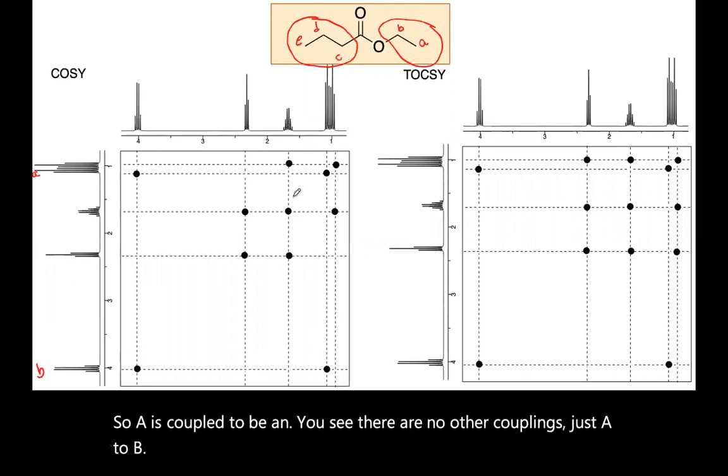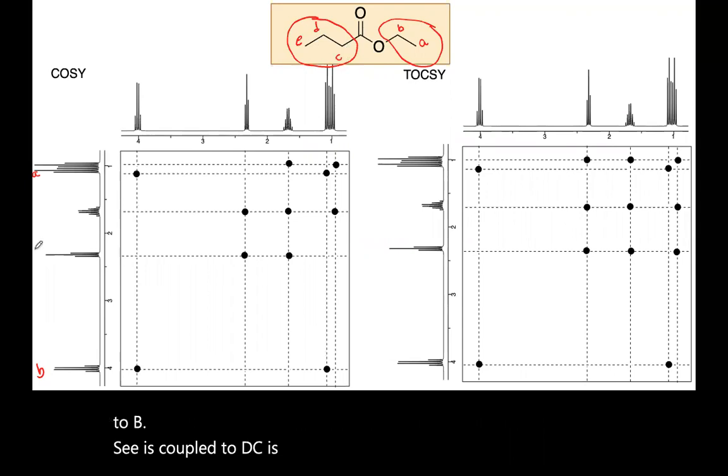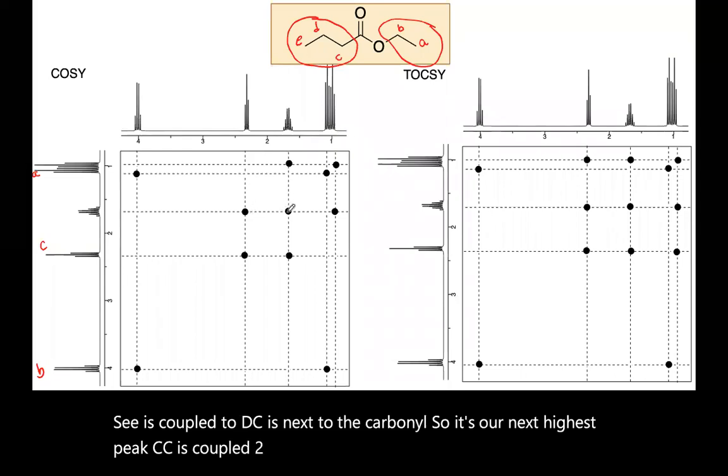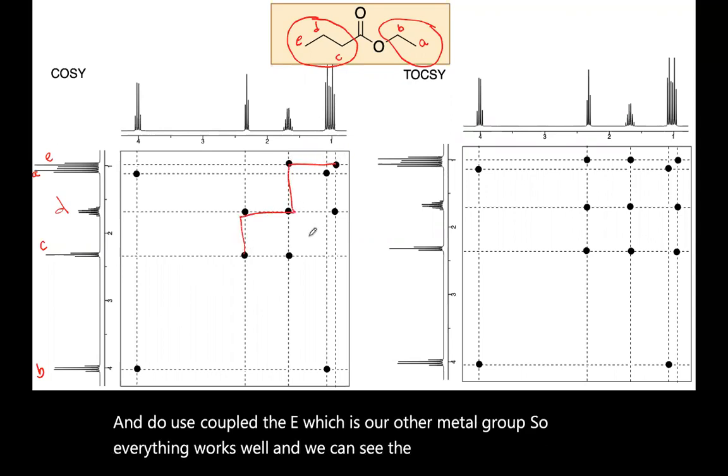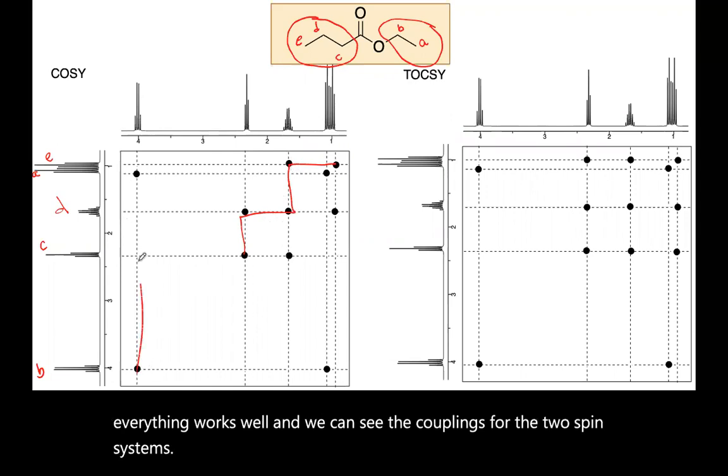C is coupled to D. C is next to the carbonyl. So it's our next highest peak, C. And C is coupled to D. So this has to be D. And D is coupled to E, which is our other multiplet group. So everything works well and we can see the couplings for the two spin systems. And this is the other spin system.